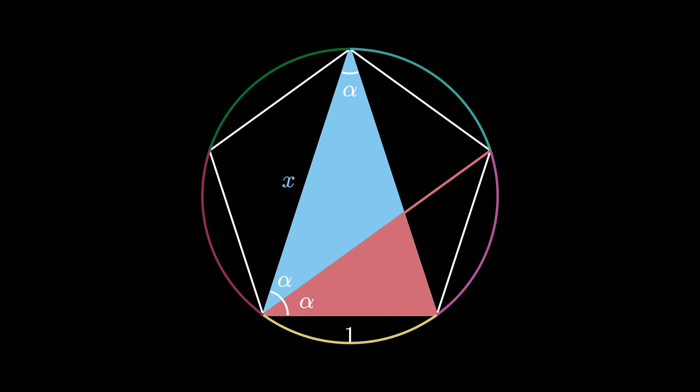This also means that the other angle that is in the blue triangle and the red triangle must be 2 times alpha. But now the four pictured angles give us the full measure of the triangle, so we see that 5 times alpha must be 180 degrees, and therefore alpha must be 36 degrees.